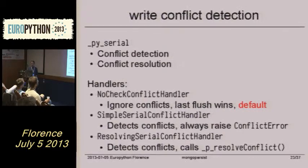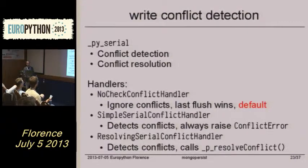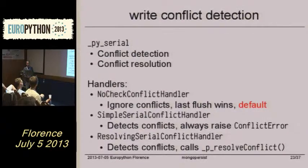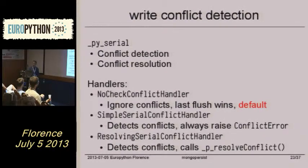Write conflict detection. As I said, most NoSQL databases do not handle this. That means you just write to the database the new documents, and you have no idea whether someone changed it while you are doing your request.